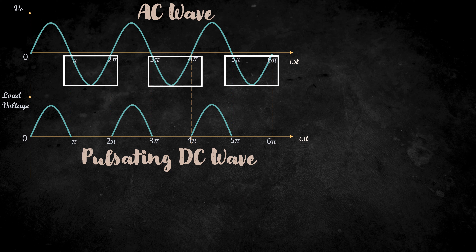Therefore, the half wave rectifier circuit will be like this. Here, diode acts like a switch, allowing the current in one direction and blocking the opposite direction current.